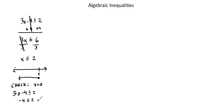Now ideally you would want to also check the extreme — the value of 2. If you input 2 into the inequality the statement is true. And let's also consider a value outside of the inequality: x equals 3. When we use x equals 3, we have 3 times 3 minus 4 is less than or equal to 2, which simplifies to 5 is less than or equal to 2, which is not true. So that is evidence that we should not be including 3 in the solution — and we aren't. X is less than or equal to 2 excludes 3.